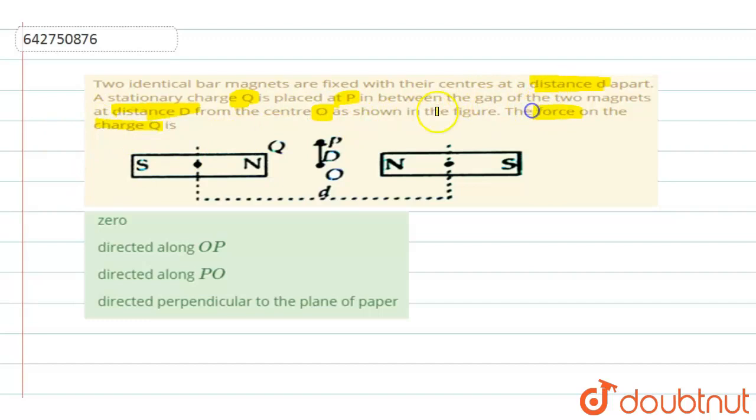So here you see the question, they have clearly mentioned what all data you need. Two bar magnets are present and the point O is at the center at a distance d from the magnet. And this distance, the distance between the centers of two magnets they are saying it as small d.